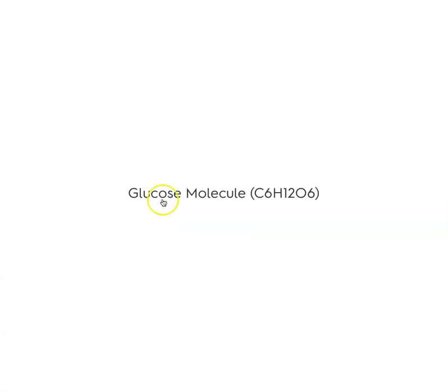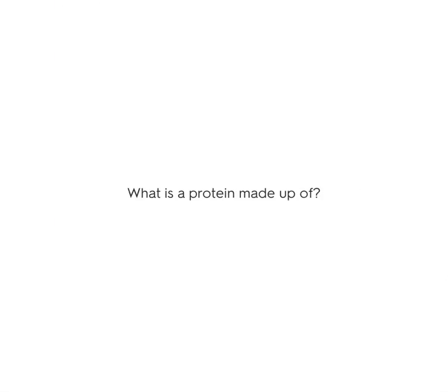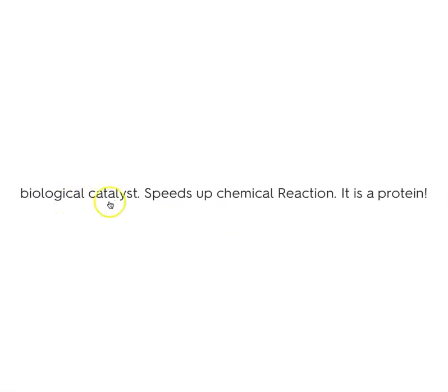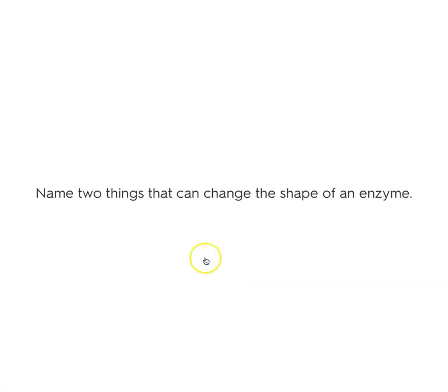What is a protein made up of? A protein is made up of amino acids. What is an enzyme? An enzyme is a biological catalyst. A catalyst speeds up a chemical reaction, and an enzyme is a protein.